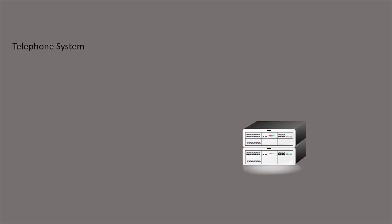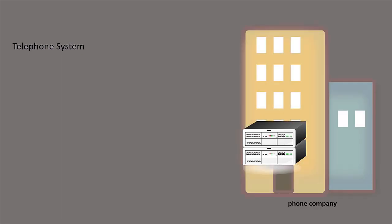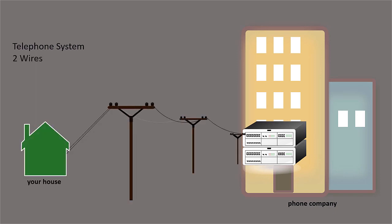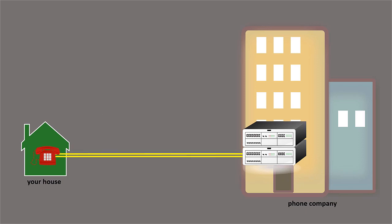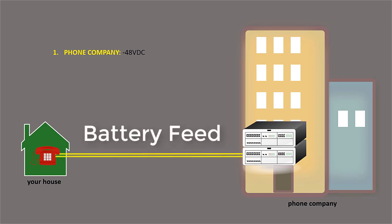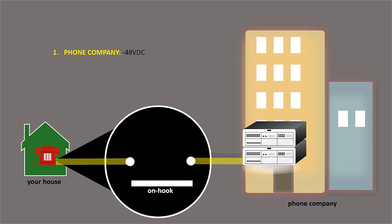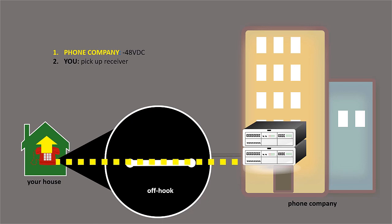To understand the difference in these ports, we need to understand the functions of a telephone system. For our example, we'll look at a common telephone system located at the phone company, the two wires that run to your house, and the telephone plugged into the phone jack connected to these two wires. On the two wires from the phone company to your house, negative 48 volts DC is applied — this is known as battery feed. When your telephone is idle, or on hook, the circuit is open. When you pick up the receiver to make a call, a switch in the telephone completes the circuit, interrupting the battery feed and alerting the phone company that you would like to make a call.